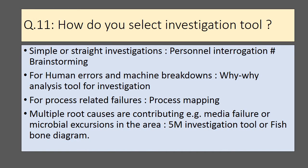How do you select an investigation tool for deviation investigation? Selection depends on the investigator or investigation team. For simple or straightforward investigations, personal interrogation and brainstorming can be used. For human errors and machine breakdown investigations, 5-Why analysis is better suited. For process-related failures like low yield or low assay, process mapping can be used. When there are multiple root causes or contributing factors like media failure or microbial excursions, 5M tool or fishbone diagram can be used.